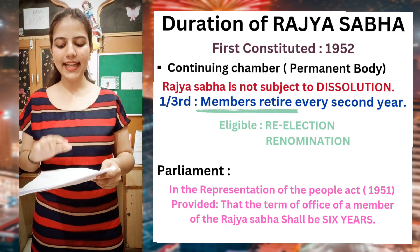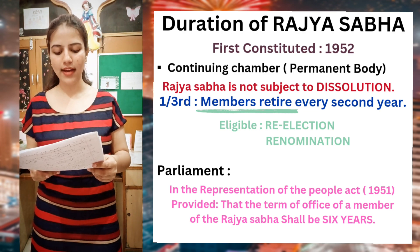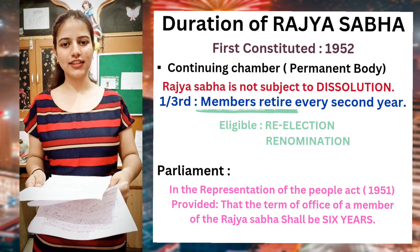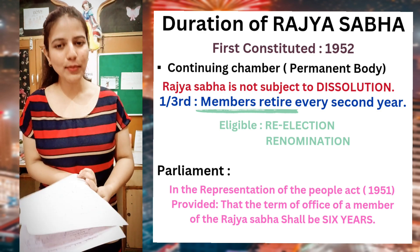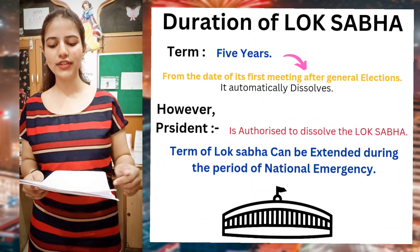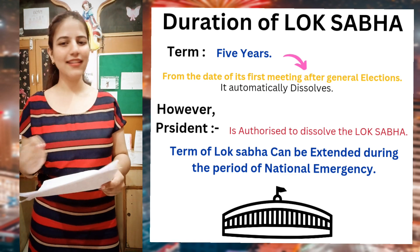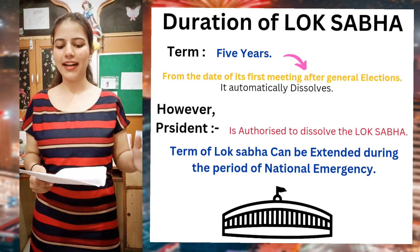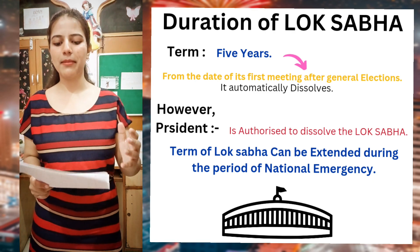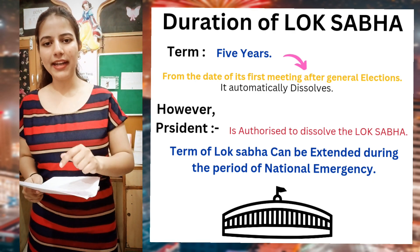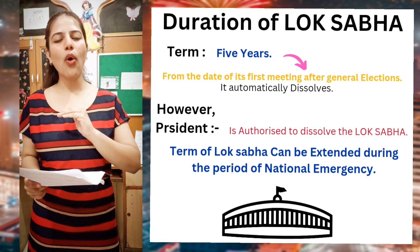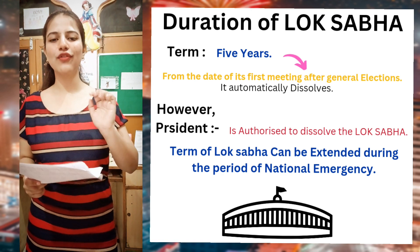The Representation of People Act 1951 provided that the term of office for a member of Rajya Sabha shall be six years. Now, if we talk about the duration of Lok Sabha, it is not a permanent body and it is not a continuing chamber. It can be dissolved. The normal term of members is five years — from the date of the first meeting after the general election up to five years, after which it automatically gets dissolved.